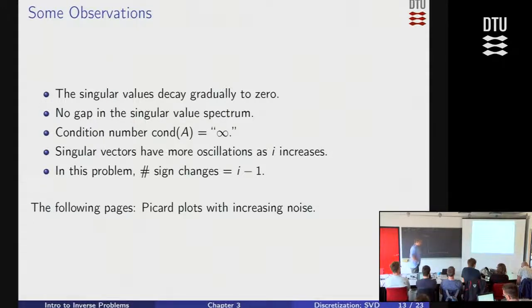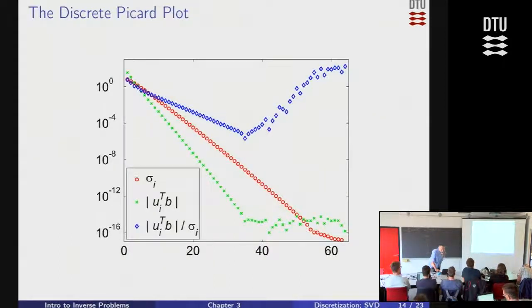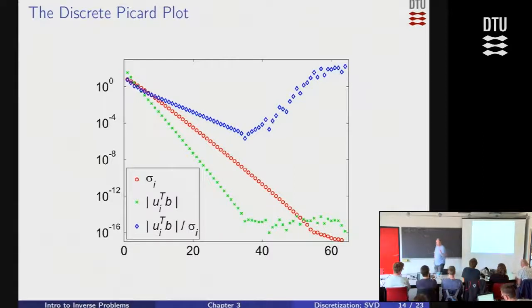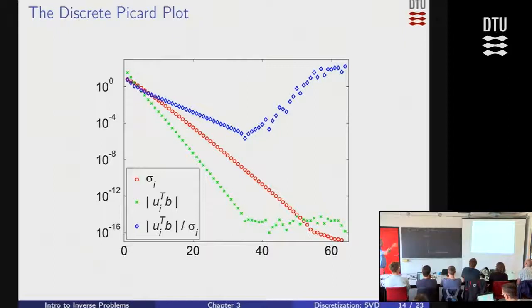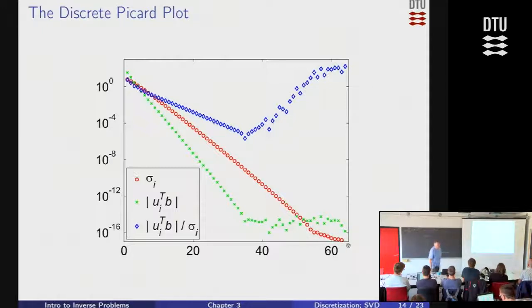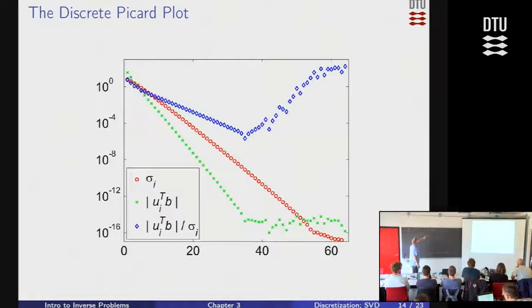Now let's look at Picard plots. A Picard plot is a plot of those important ingredients coming from the singular value decomposition — the ingredients of the expression for the solution X. First, we need to see the singular values and how fast they decay. Based on the discretization of the gravity test problem, you can see this fast decay of singular values until they hit something related to machine precision and level off. The green crosses are the coefficients of the right-hand side in terms of the singular value decomposition — they appear in the numerator in the expression for X.